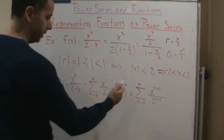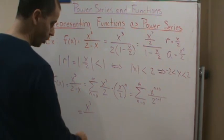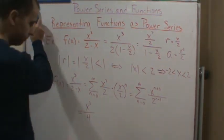So it'll be, well n equals 0, this is going to be x cubed over 4, or excuse me, over 2.